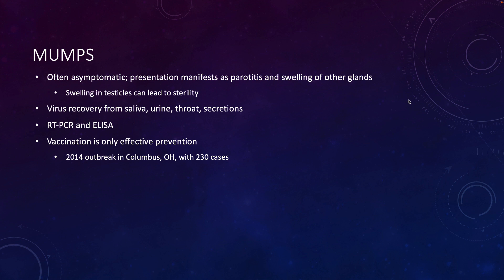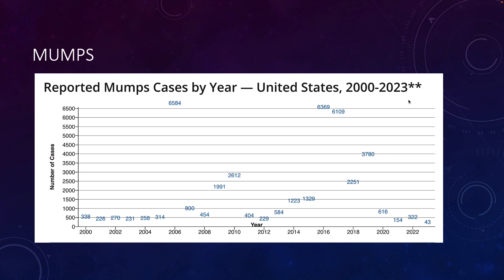Virus can be recovered from the saliva, urine, the throat, and other body secretions. It can usually be diagnosed by the characteristic giant swollen jaw from the swollen salivary glands, but you can also do reverse transcription PCR or ELISA. We have a relatively effective vaccine — it's the only way to really prevent infection. There was an outbreak in 2014 in Columbus, Ohio, where 230 patients were diagnosed with mumps. You've probably heard of MMR: measles, mumps, and rubella. We see higher cases of mumps generally every year than we do of measles, but mumps is also a much less severe infection.